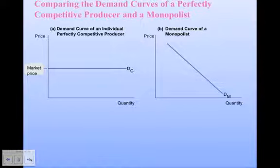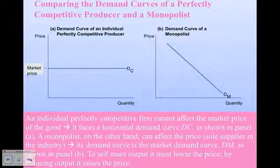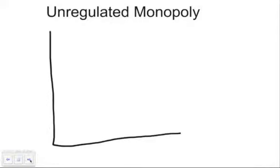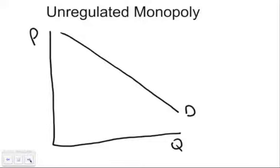Comparing demand curves: perfect competition is perfectly elastic, while the demand curve for a monopolist is usually inelastic because they're the only ones producing that good. Now, the nice thing is there is not a short run and a long run — it's going to be one big graph. So let's draw that graph with price on the vertical axis and quantity on the horizontal axis.